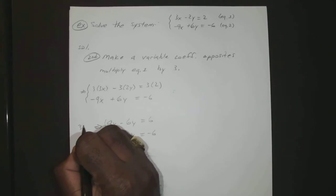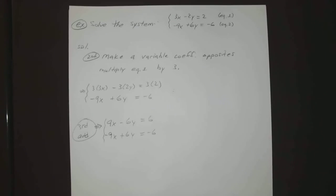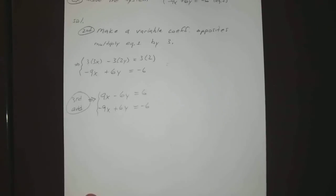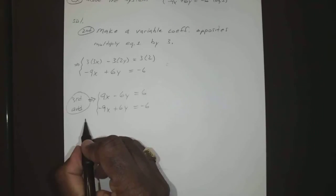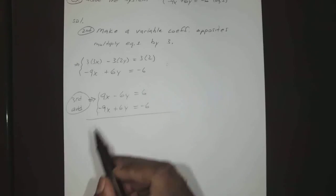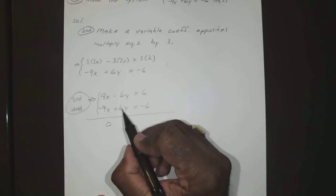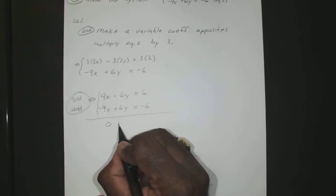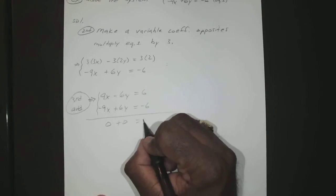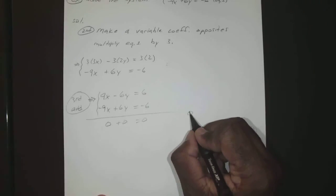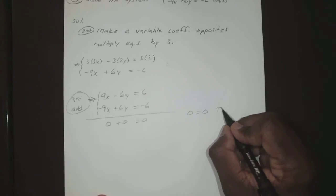So you have a third step, which is just to add them together. Okay, so once you do that, 9x - 9x is 0, -6y + 6y is 0, and 6 - 6 is 0. So you're left with 0 = 0, which is true.